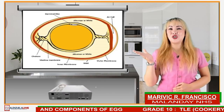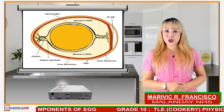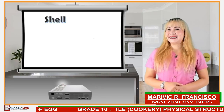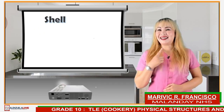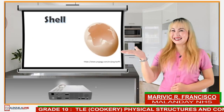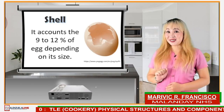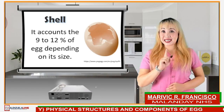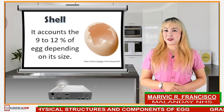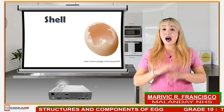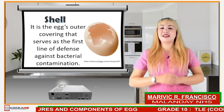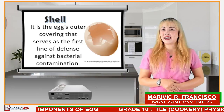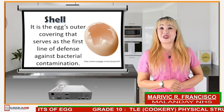This illustration shows the physical structure of an egg. Shell — it accounts for about 9 to 12% of the egg depending on its size. It is the egg's outer covering that serves as the first line of defense against bacterial contamination.